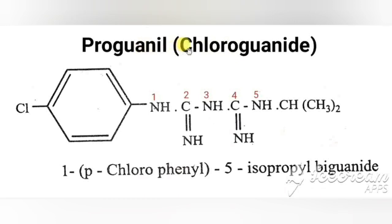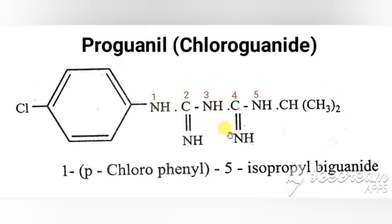The next drug is proguanil, otherwise called chloroguanide. Its structure contains a chlorophenyl group (chlorobenzene), attached to NH-C(=NH)-NH-NH-C(=NH)-NH-CH(CH3)2. A guanidine group is NH2-C(=NH)-NH2. Proguanil has two guanidine groups, which is why it belongs to the biguanide class. Examples of biguanides include proguanil and cycloguanil.